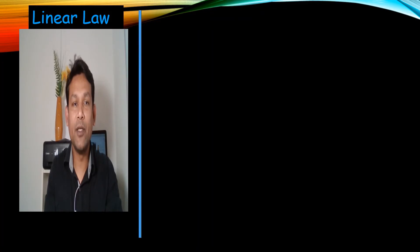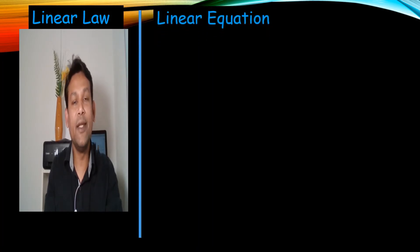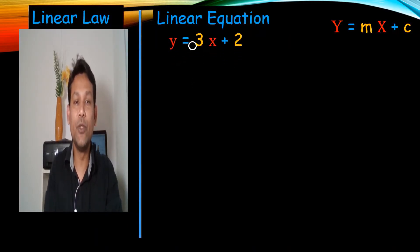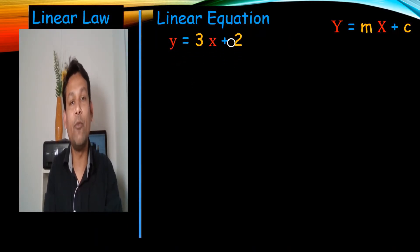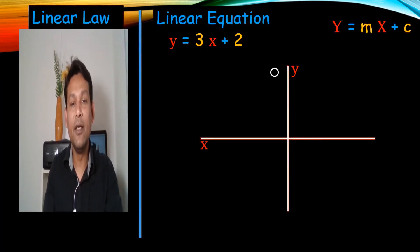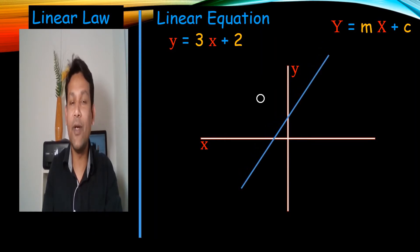Hi everyone, welcome back to my channel Vertex Manoj Roy. We are doing linear law. The linear equation is y equals mx plus c. I will use one example first: y equals 3x plus 2. When I draw the graph with x and y axes, the graph will be a straight line. It's very simple — a linear equation means a linear straight line.